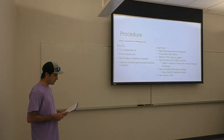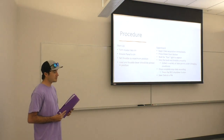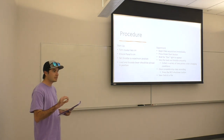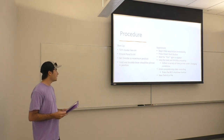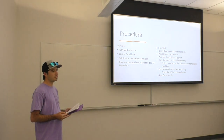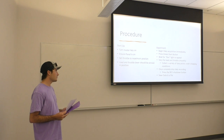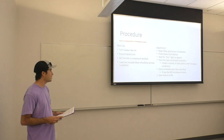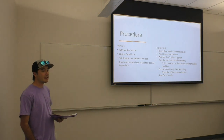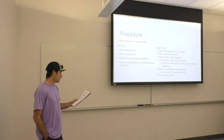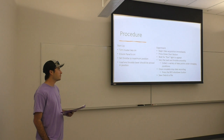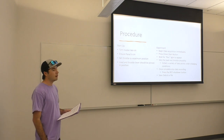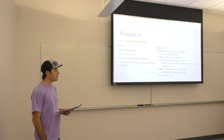For the startup procedure: turn the master key on as the first step, then make sure the panel is lit up with its various lights and gauges. Set the throttle to maximum position — this programs it to 100%. Set the load and throttle lever and pin them in the proper position. Once the experiment begins, start data acquisition immediately. Press the start button and wait for the run light to appear. Vary the load and throttle smoothly for a clean data set. Once finished collecting data, hit the red stop button and save to a file.